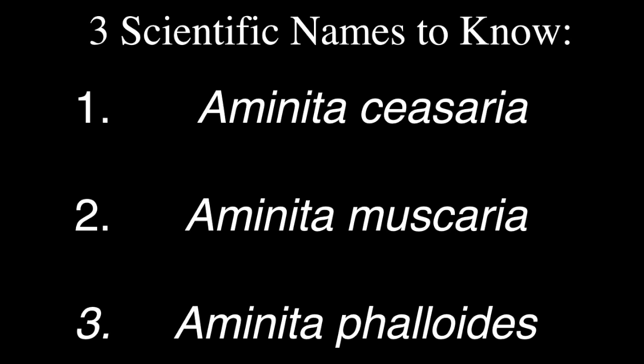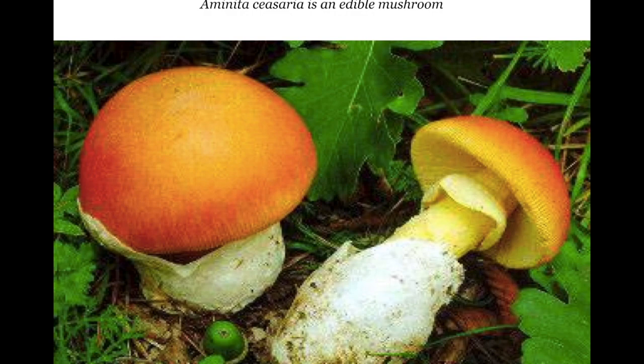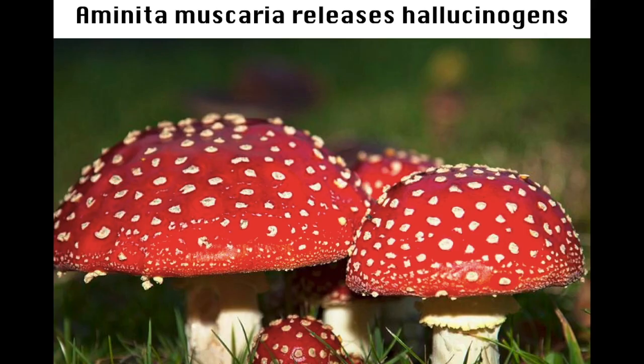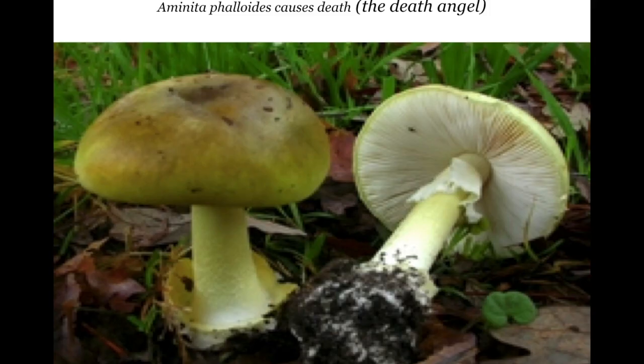Three scientific names you need to know are Amanita caesarea, Amanita muscaria, and Amanita phalloides. Amanita caesarea is an edible mushroom. Amanita muscaria causes hallucinations, and Amanita phalloides is called the death angel — it causes death. It's notable that all three are in the same genus, but each species has a completely different character trait: causing death, hallucinations, or being completely fine and edible. Amanita muscaria looks like the Mario mushroom; Amanita phalloides looks like a normal mushroom but is deadly.